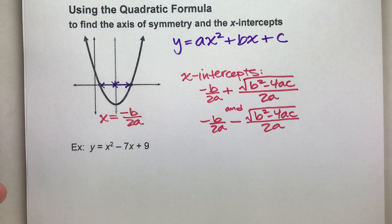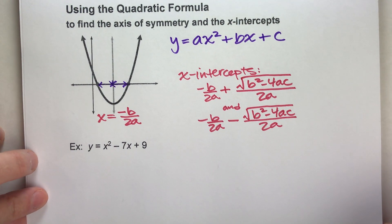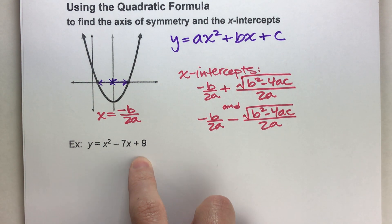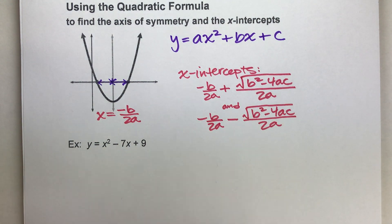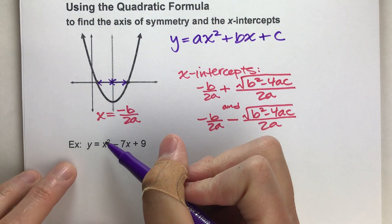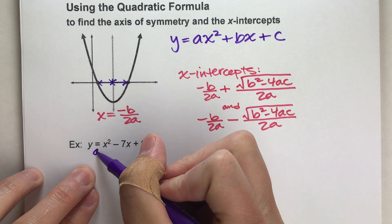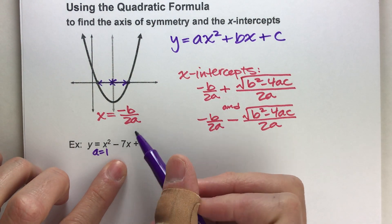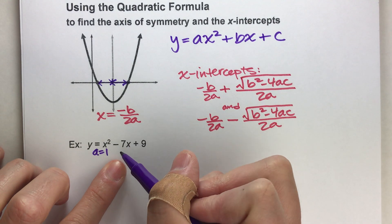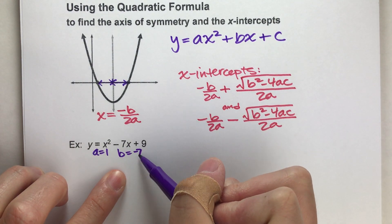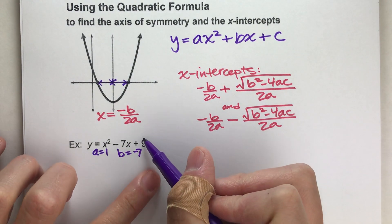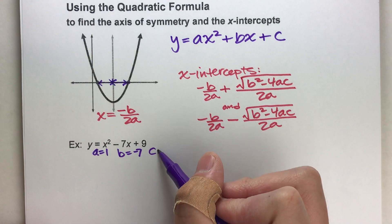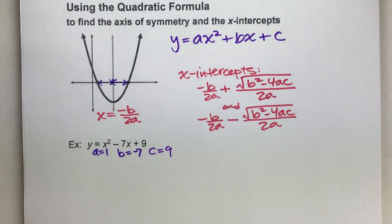Let's do a couple of examples. We have y equals x squared minus 7x plus 9. In this situation, the number next to x squared — the a — is 1. The number next to x is negative 7, so b is negative 7. And then the constant term at the end is positive 9, so c is 9.